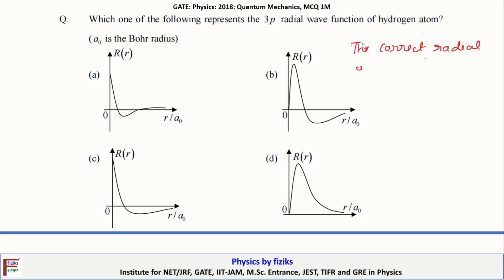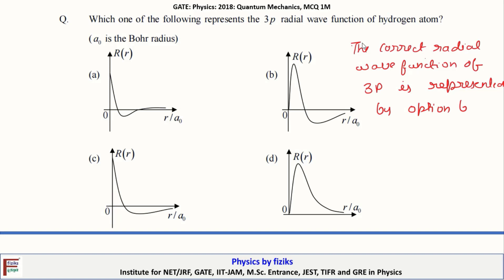The correct radial wave function for 3P is represented by option B. The 3P radial wave function is correctly represented by option B. I recommend you should also know the wave function for 1S, 2P, and 3P.